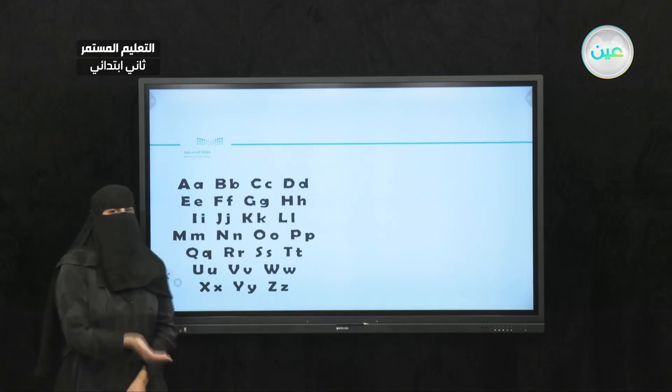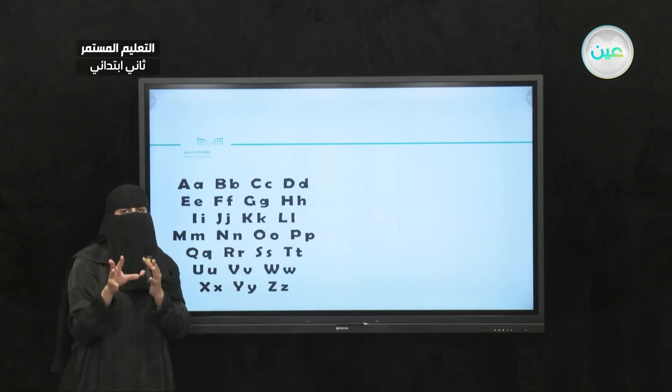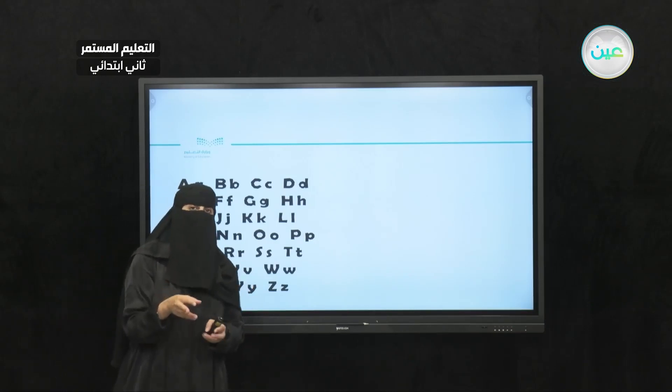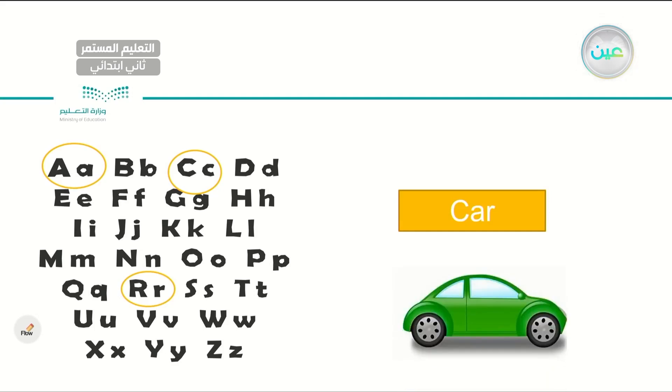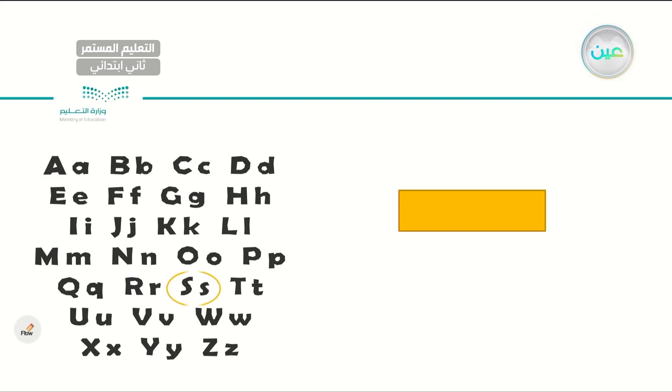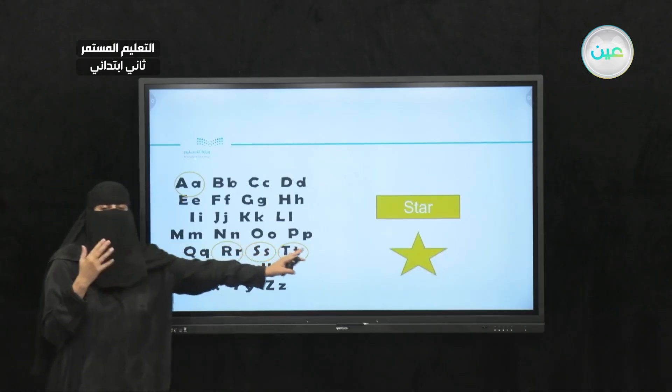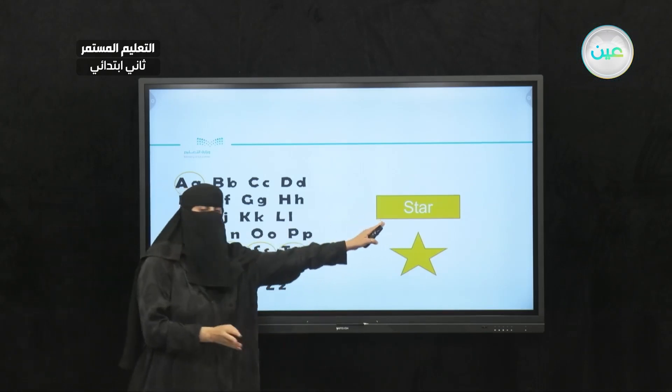Here, as we did in the previous lesson, we will be making some words using these letters. We started with C, A, and R, right? And we have the word car. Now, I need you to come up with more words. Can you think of more words? For example, I have S, T, A, and R. What do you think? A word that has S, T, A, and R. The word is star. I use four letters to make this word.